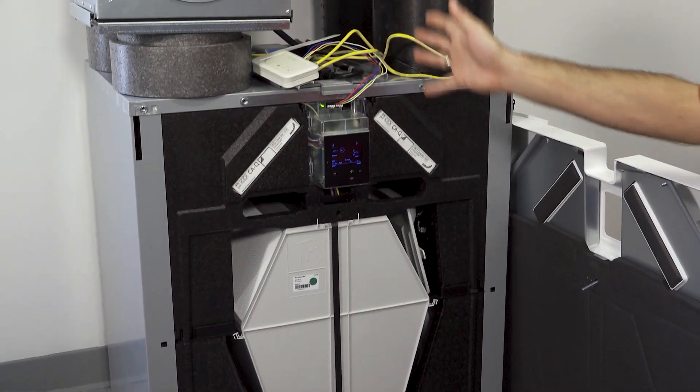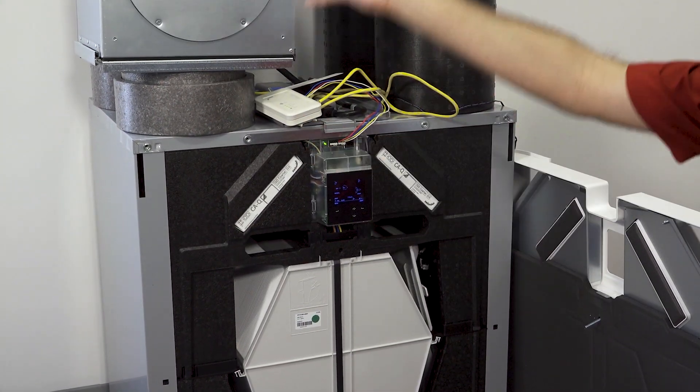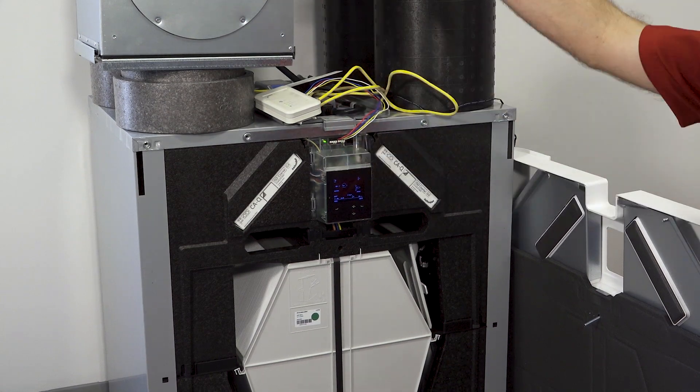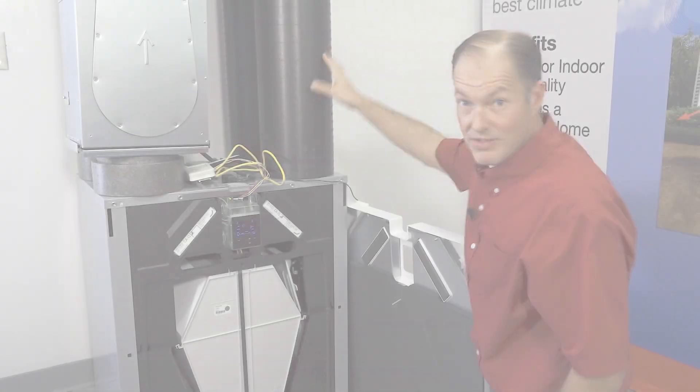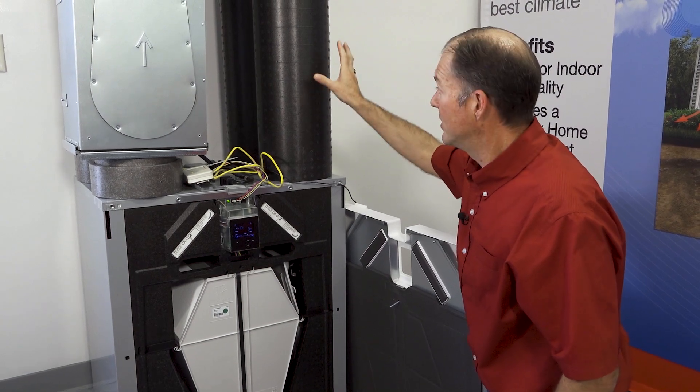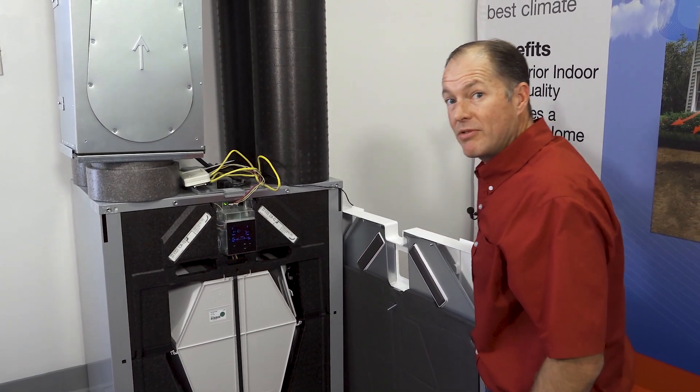And just like the old days, the hot side stays hot on the left. So if it's a left-handed unit, that means your warm side, your bathroom and bedroom side, is on the left. This is the cold side of the unit.